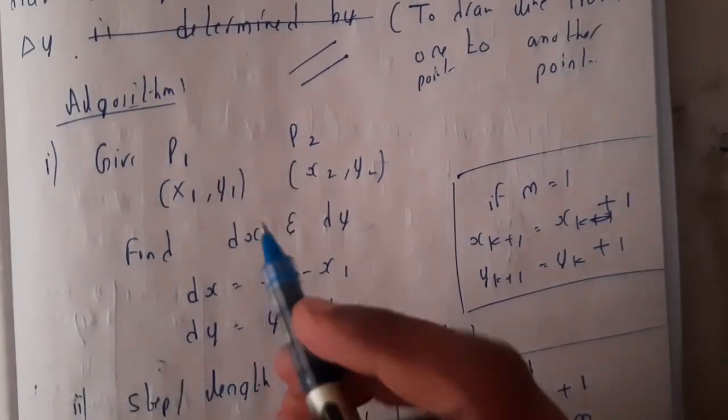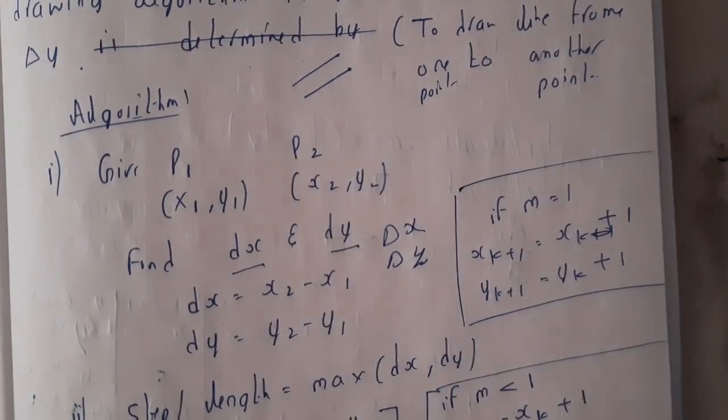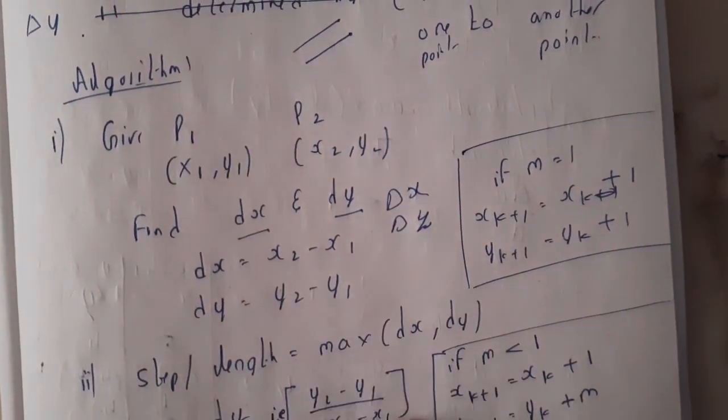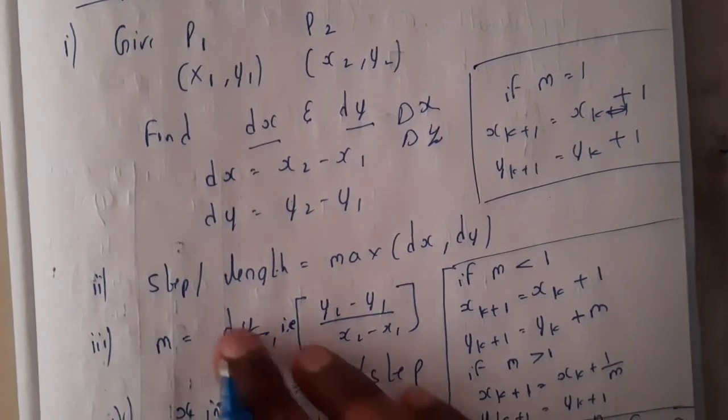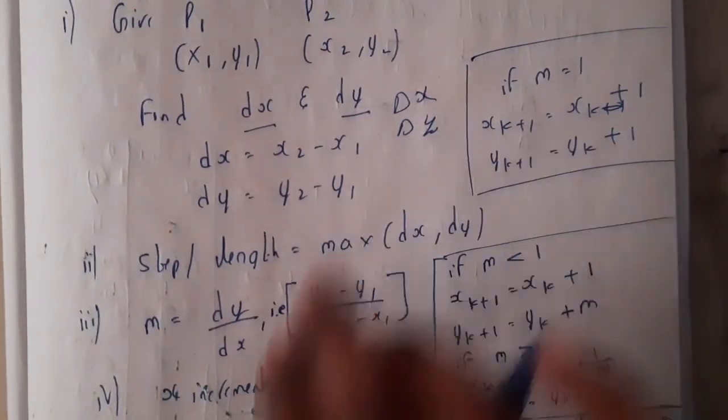We will be finding dx and dy. You can represent it in delta x or delta y or in terms of dx and dy, it's fine. Now in the next step you will be calculating the step length, that is the maximum of these both, which is having the maximum that you will be substituting in place of step length.